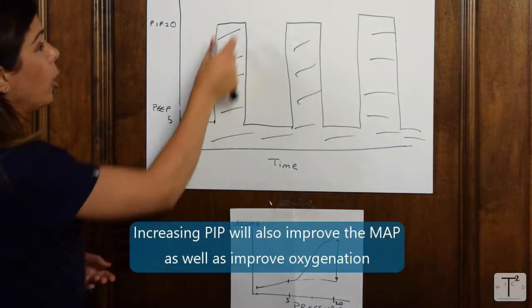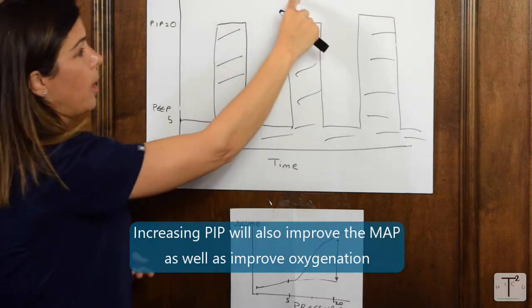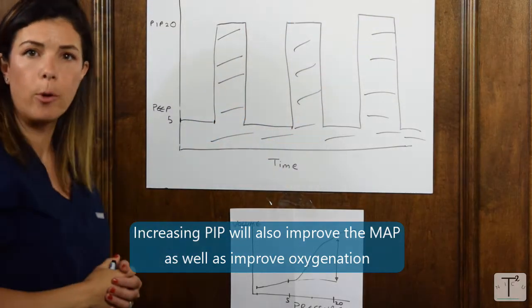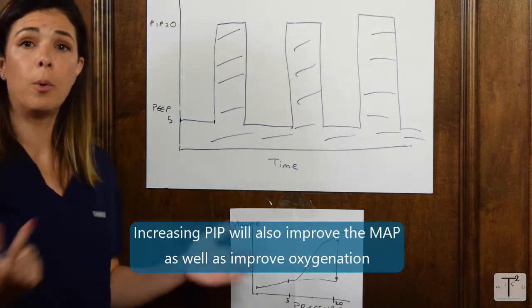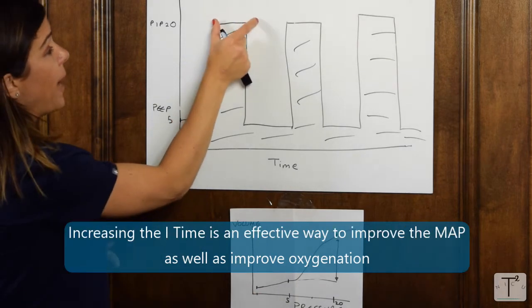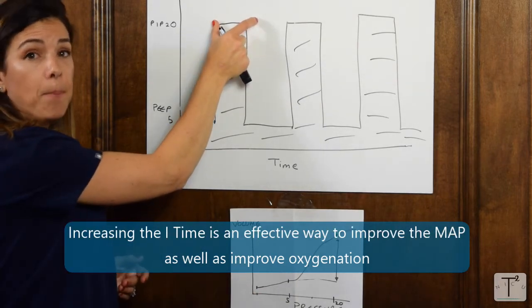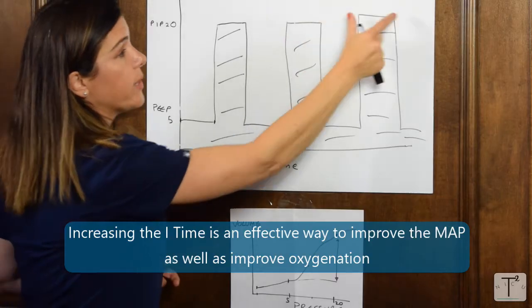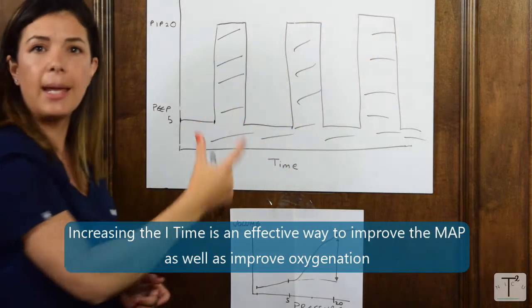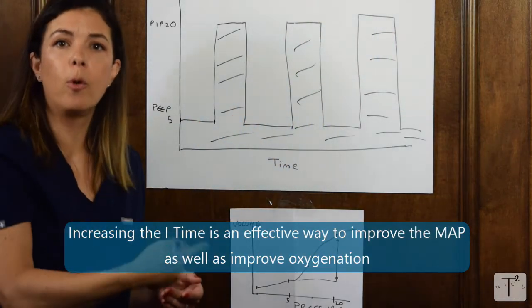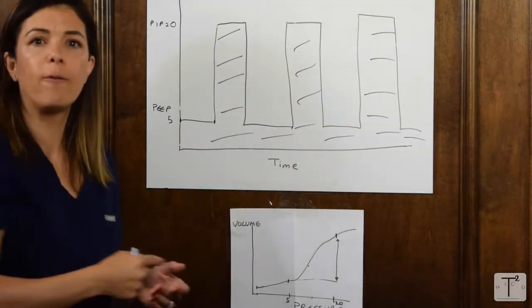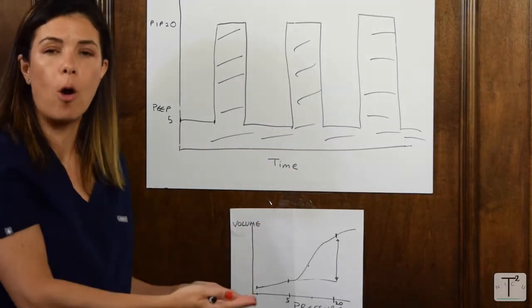What else could you do? You could also go up on the PIP. That will also improve your oxygenation. What else could you do? You could spend a longer time in PIP. If all of these were slightly wider, that's going to improve the area under the curve, therefore the mean airway pressure, therefore your oxygenation.